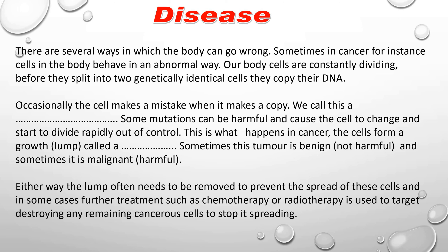There are several ways in which the body can go wrong. Sometimes in cancer, which is what we're going to have a look at today, cells in the body behave in an abnormal way — they don't do what they should normally do. Our body cells are constantly dividing in our skin, hair, nails, bones, and all of your body organs. Before they split into two genetically identical cells, they copy their DNA. Imagine this is a bit like putting a sheet of paper on a photocopier and pressing the copy button — hopefully what you'd get out the other end would be an exact copy.